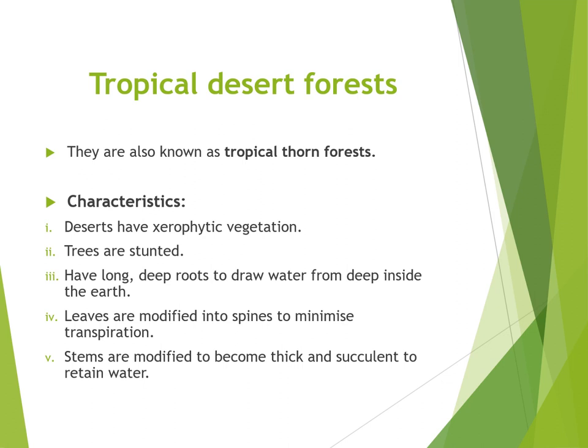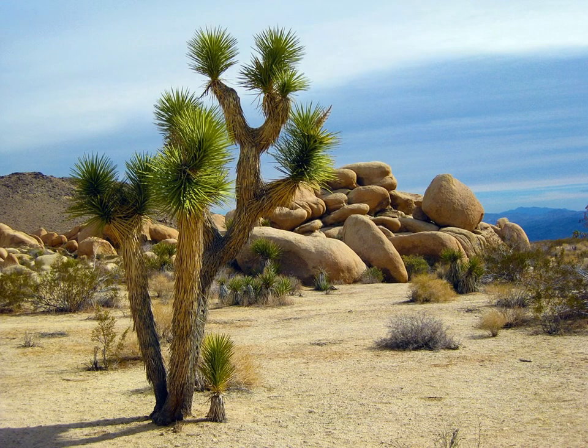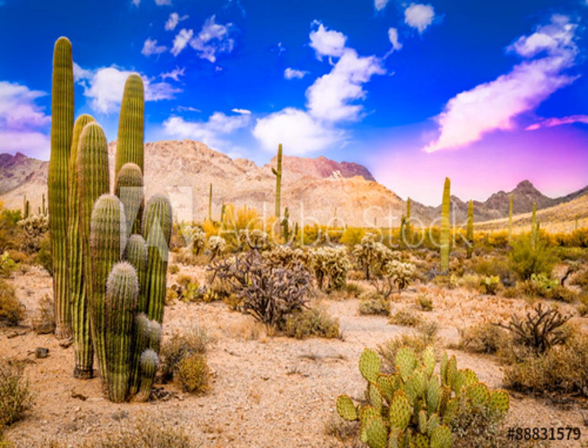Tropical desert forests are also known as tropical thorn forests. Deserts have xerophytic vegetation. Trees are stunted because of scarcity of rainfall. They have long, deep roots to draw water from deep inside the earth. Leaves are modified into spines to minimize transpiration, and stems are modified to become thick and succulent to retain water. Here, the leaves are reduced to spines to minimize transpiration, and the stems are thick. These are cactus plants — they are succulent and fleshy. They can survive in dry land because they are xerophytic plants.